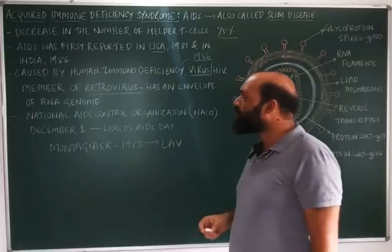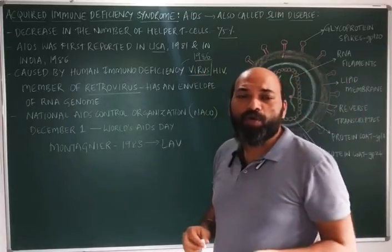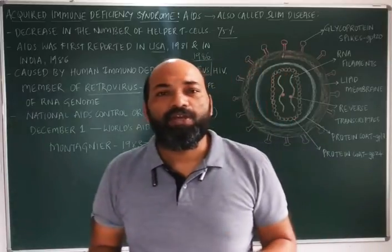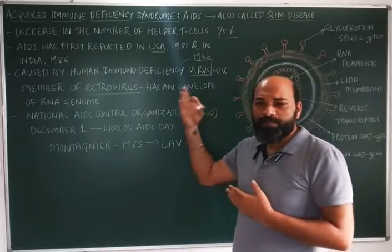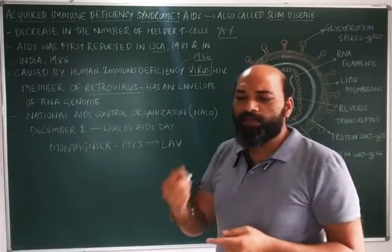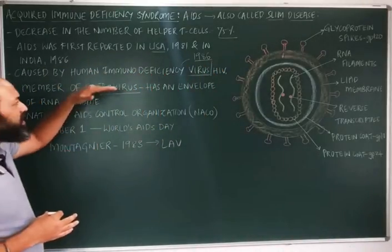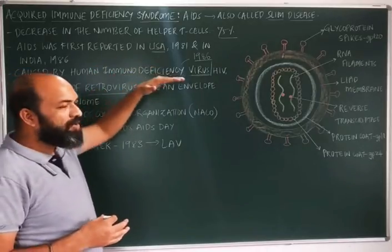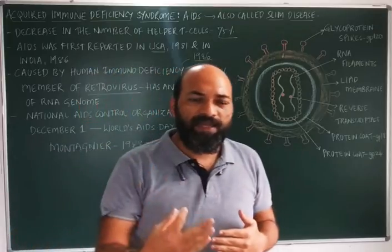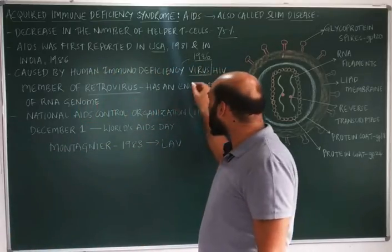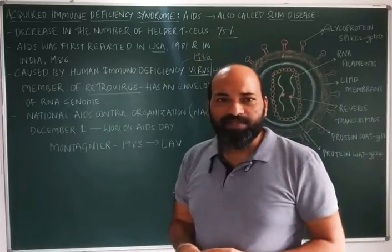Prior to being called HIV, the virus was also called HCLV — Human Cell Leukemia Virus — as it was known to cause leukemia. So in the 1970s it was called HCLV, then LAV, then HCLV again, and finally it became known as HIV. HIV belongs to the group called retroviruses.